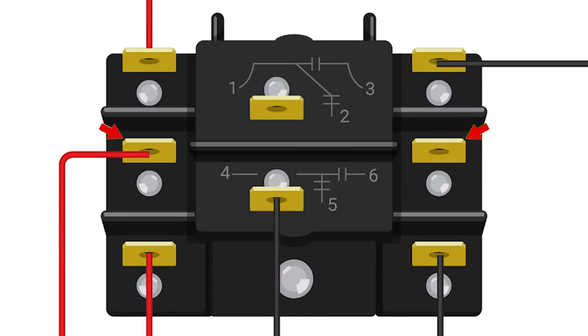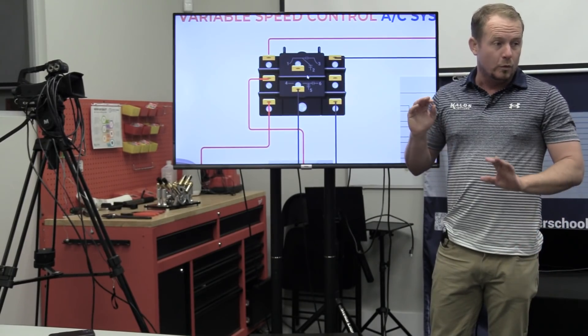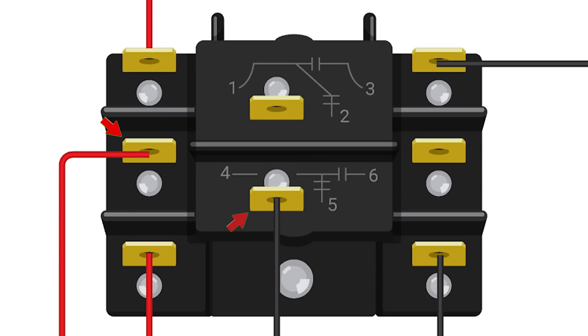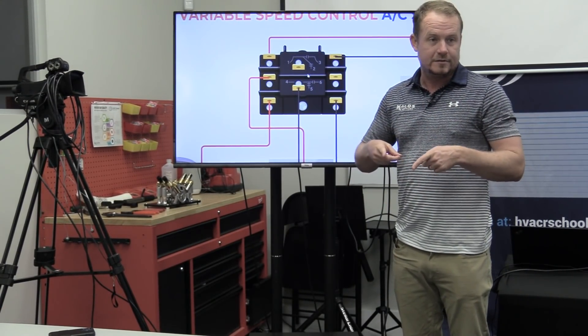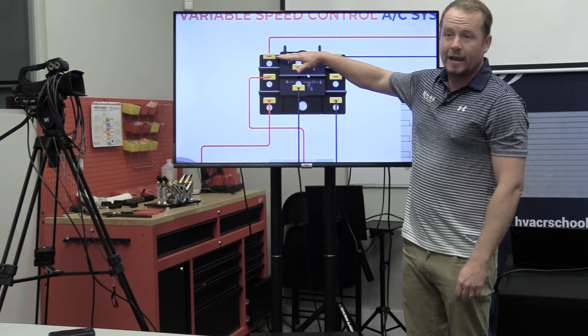And if I go from here to here, I would have an open circuit with it de-energized. Now when I energize it, these contacts that were normally closed, guess what happens? They go open, they drop. And the ones that were normally open, what do they do? They close, right?